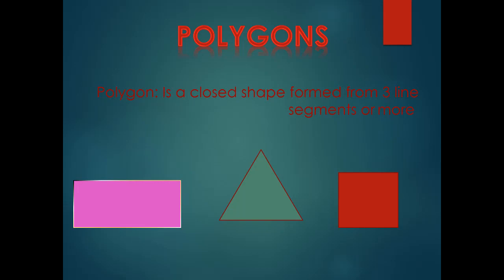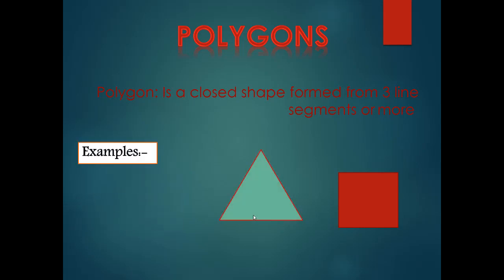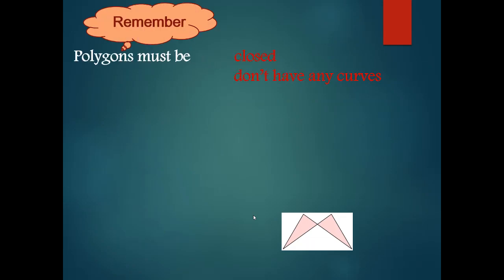A closed shape formed from three line segments or more. Like what, my students? Like this rectangle, or this triangle, or this square. Let's see together more exercises. I said the polygon must be closed and not have any curve.